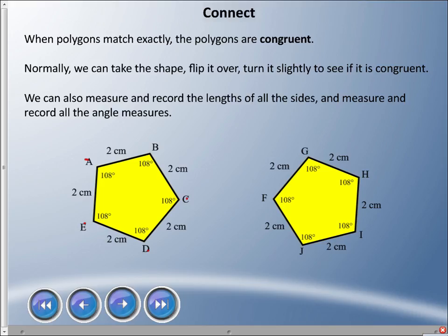So these two pentagons, you can see that I measured them, they're two centimeters on every side and all the angles 108 degrees. We know these as regular pentagons, regular polygons. And so these two are congruent because I measured them with a protractor and a ruler.